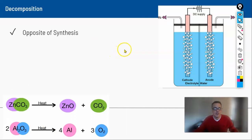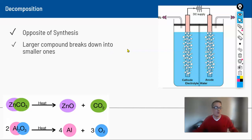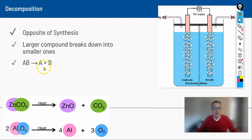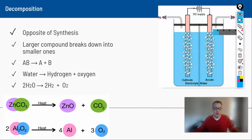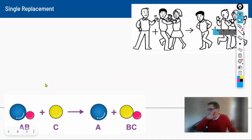The opposite of synthesis is a decomposition reaction — think of decomposition as something breaking down or rotting. Larger compounds break into smaller ones. There is only one substance on the left side of the arrow, and we end up with two substances on the right. For example, when you run electricity through water it breaks apart into hydrogen gas and oxygen gas: H₂O → H₂ + O₂. The key clue is starting with one substance and ending with two.